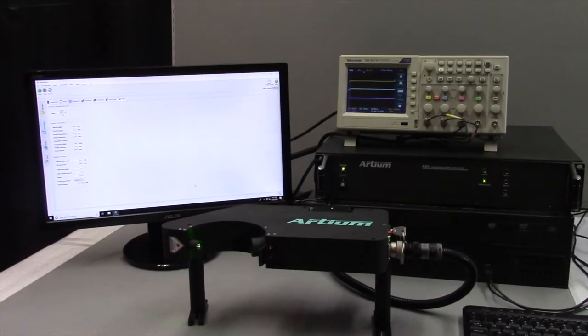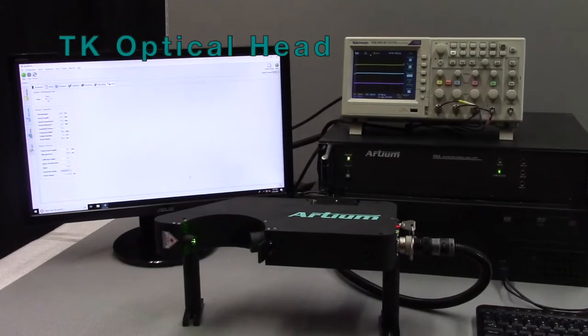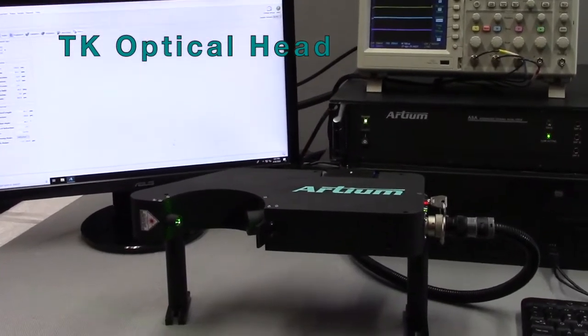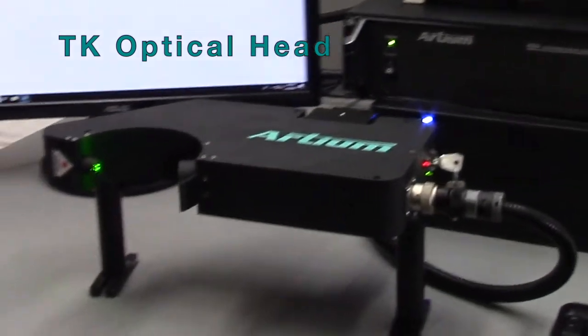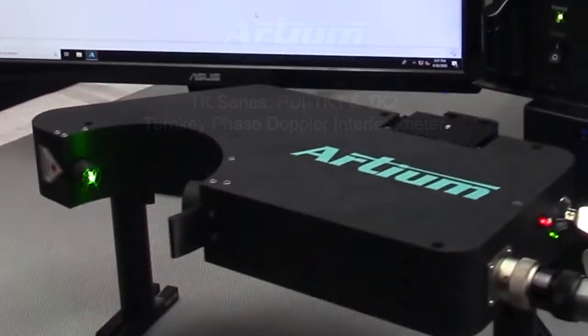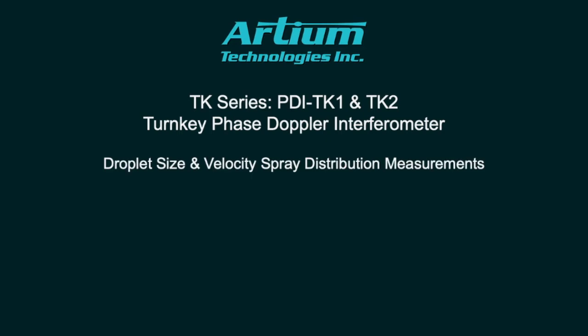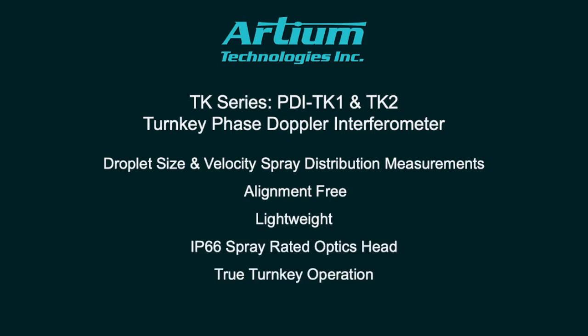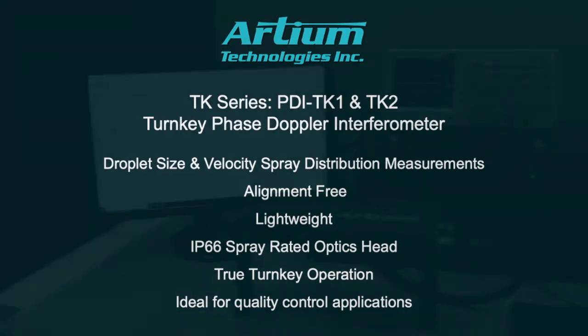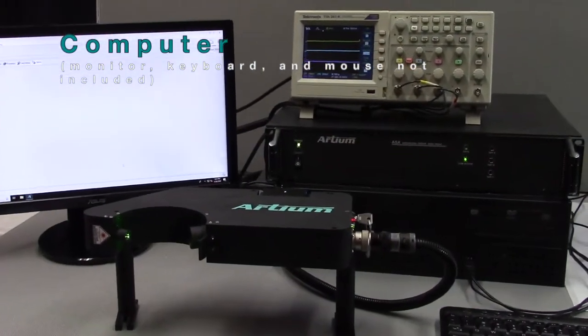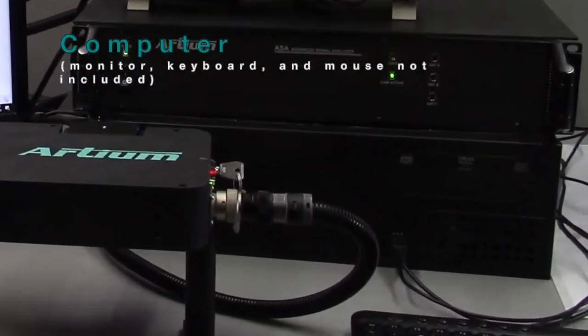So I'm going to introduce you the components of this system. We have the optical head that contains the laser sensor being the transmitter and the receiver, contained in one package. We have the computer and the monitor and the mouse and keyboard.